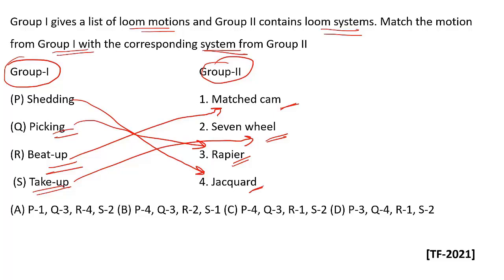When the shed opens and the warp and weft interact, and one pick comes and strikes onto the loom, the warp and weft are joined together to form the fabric. Matching the options: P4, Q3, R1, and S2, so option C is the correct option.